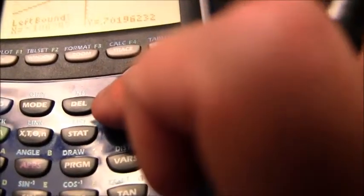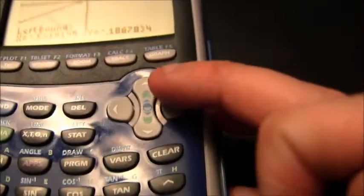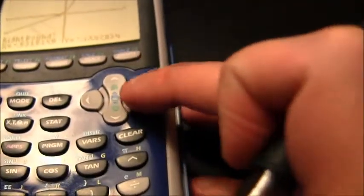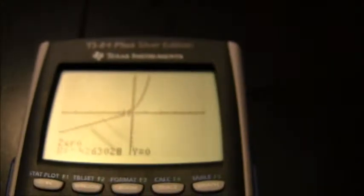And so I need to go to my left bound and my right bound. And in this case x is approximately negative 0.426.